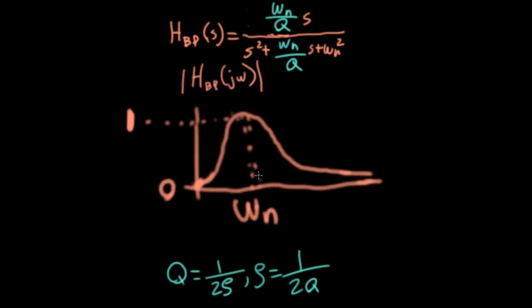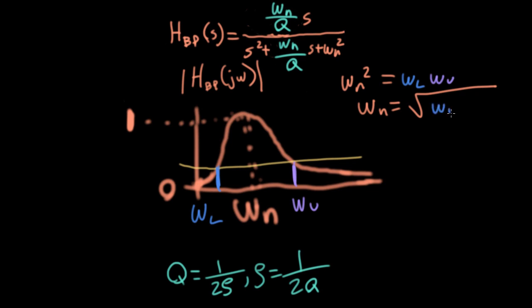So here's something interesting about this bandpass function. If you take any horizontal slice, and it doesn't matter where you slice it, pick anywhere you want. Let's say we pick it down here. This horizontal line is going to intersect my graph at two points. Let's call one of them omega l for a lower frequency, and the other omega u for an upper frequency. And again, it doesn't matter where you do this. You could take a slice here and find the lower frequency and the upper frequency, and what I'm about to tell you still works. If you take omega l, multiply it by omega u, then you'll get omega n squared. So omega n is equal to the square root of omega l times omega u.